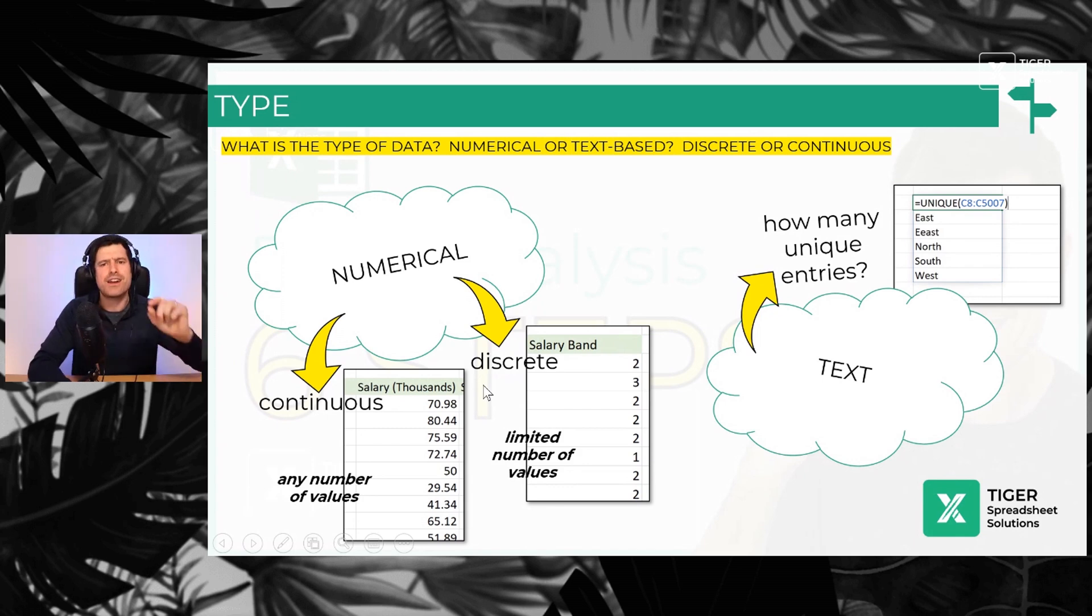Discrete data is one of a limited number of values. So in the download file, we've got our salary band and each of those entries. Each person is in one, two, three, four, salary band one, two, three, or four. So it's a limited number of entries, even though it's values. We call that discrete data.